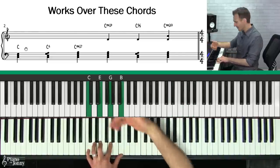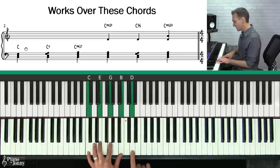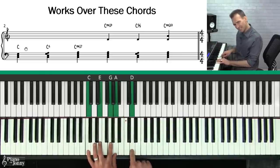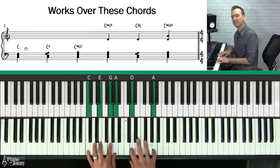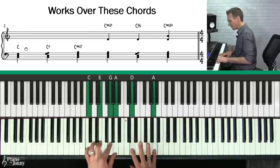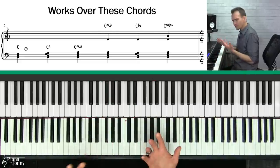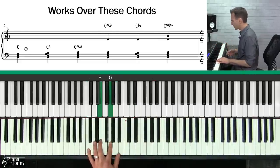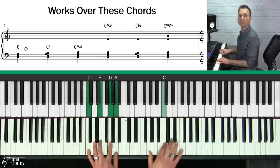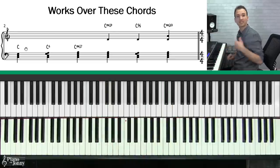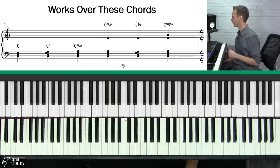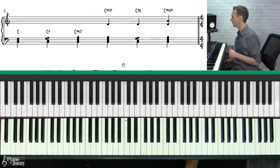C major 7, C major 9 — these are chords we tend to use in jazz — or C6/9, C major 13. These are basically all major chords. So if you're playing any sort of C major chord, you can use the C Ionian mode to improvise over those chords.